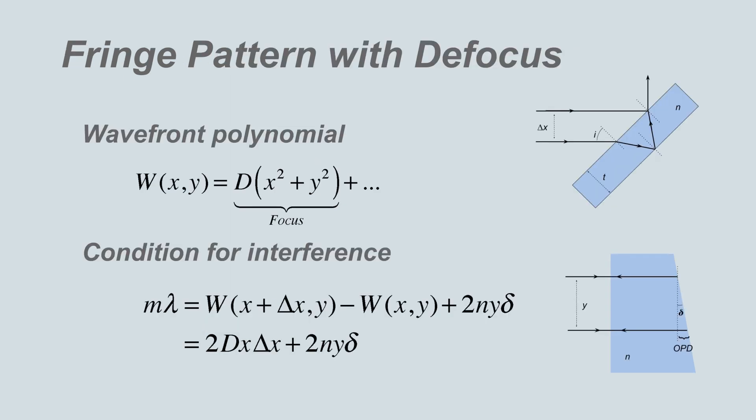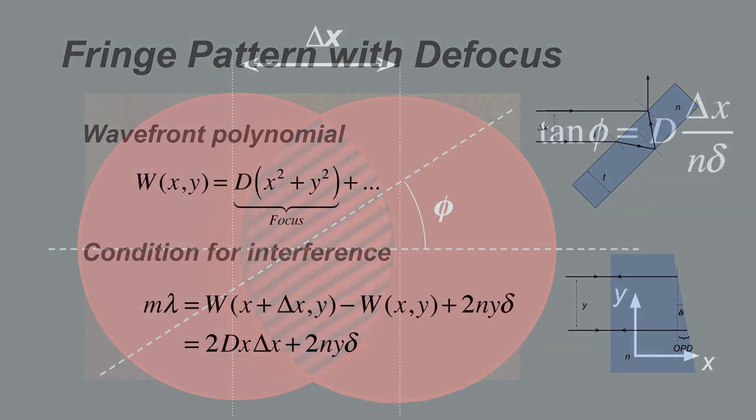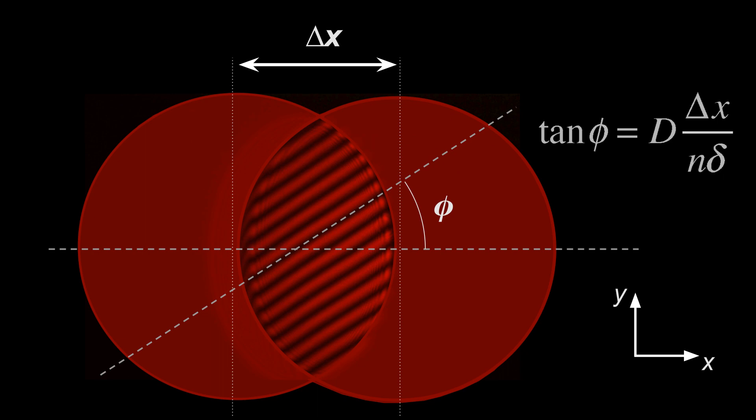Because a shearing interferometer works by comparing the wavefront at two different locations, a spherical wavefront, which is quadratic, produces a wavefront difference that is linear in shear. That is, a non-wedged parallel plate produces vertical fringes for a spherical wave. In the general case of a spherical wavefront incident on a wedged plate, the wavefront difference is linear in both x and y, and the fringes are straight and tilted with an angle proportional to the curvature.